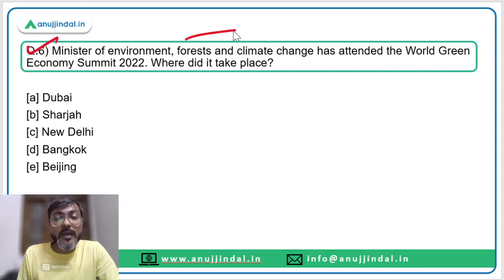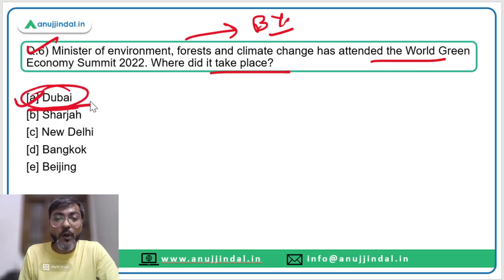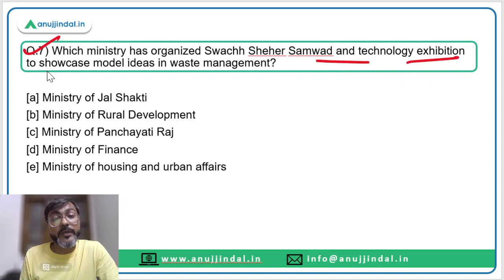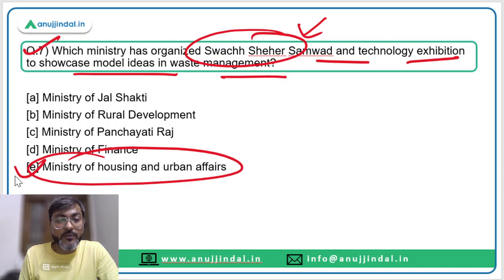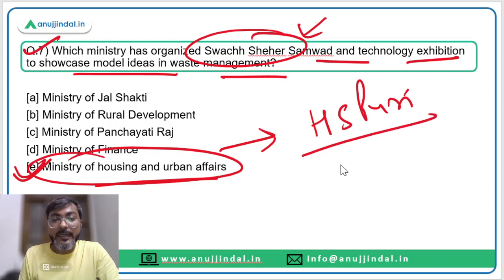Question six: Minister of Environment, Forest and Climate Change Mr. Bhupender Yadav attended the World Green Economy Summit 2022, which took place in Dubai, UAE — option A is the correct answer. Question seven: which ministry organized the Swachh Sambal and Technology Exhibition to showcase model ideas in waste management? Wherever you see the word 'Swachh,' the correct answer is the Ministry of Housing and Urban Affairs, headed by Mr. Hardeep Singh Puri, who is also the Minister of Petroleum and Natural Gas.